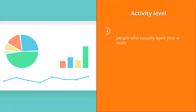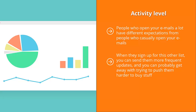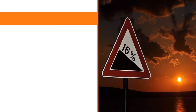Activity level: people who open your emails a lot have different expectations from people who casually open your emails. For people who are very big fans of your mailing list, you might want to ask them to sign up for another list in exchange for a reward. When they sign up for this other list, you can send them more frequent updates, and you can probably get away with trying to push them harder to buy. They probably wouldn't mind because they already made it a habit to open and read your emails. Less frequent openers can remain on your main list and receive updates at regular intervals.